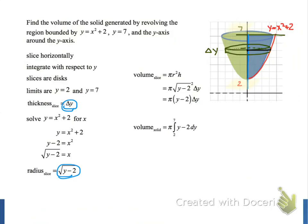To evaluate this definite integral, we see that we factored out the pi, so we need to find the antiderivative of y minus 2, which is 1 half y squared minus 2y. Then we evaluate this antiderivative at y equals 7 and y equals 2, and do the appropriate subtraction, and multiply the result by pi.